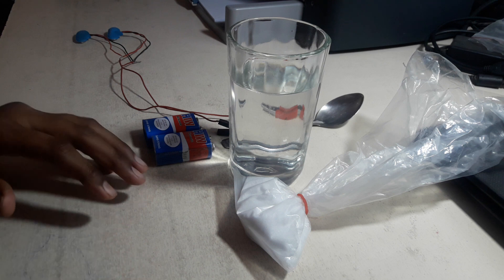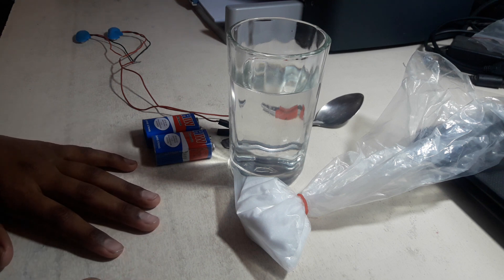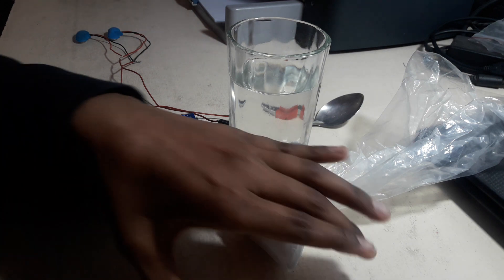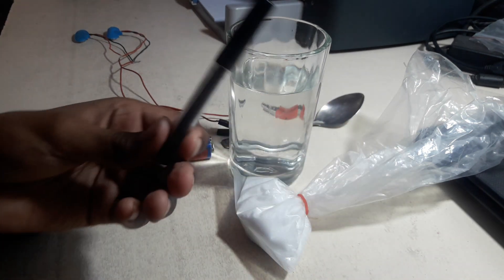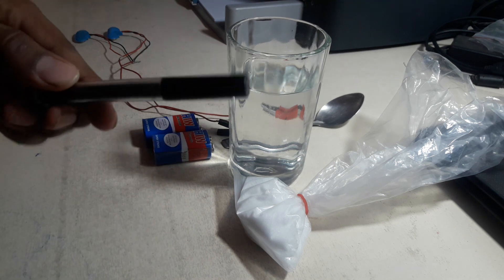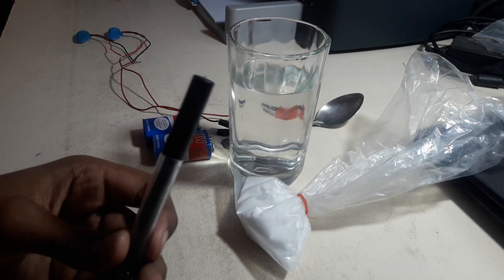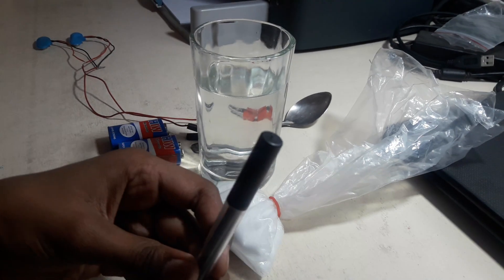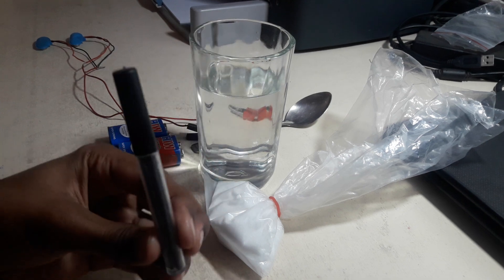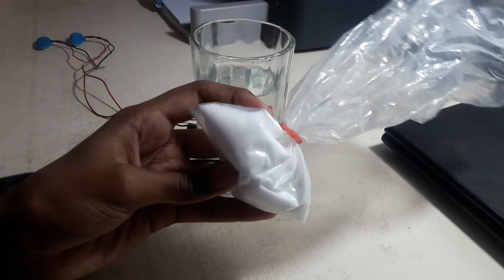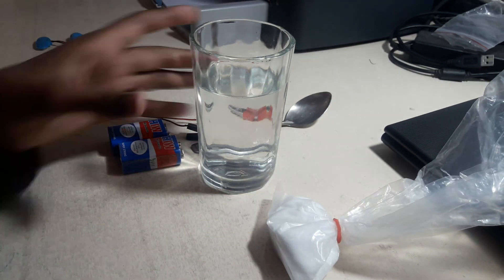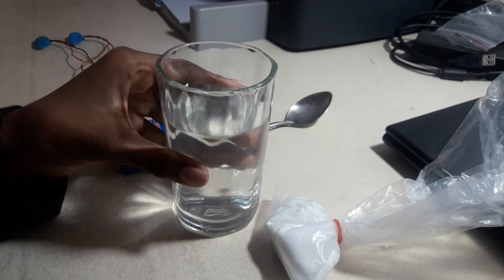First I will tell you the materials that are required to do this activity. First, graphite rods - you can get this from pencil lead. There is salt, a glass full of water, and a spoon to mix it.